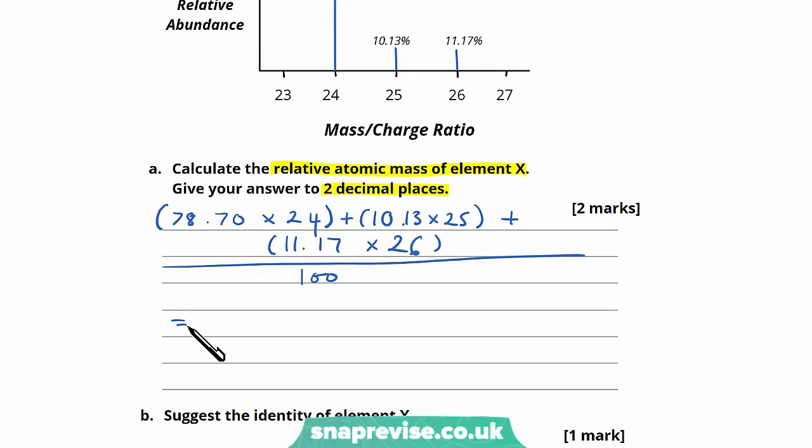That gives us, if you use a calculator, 2432.47 over 100, which is 24.3247. Now importantly, we're asked to give our answer to two decimal places, so our answer is 24.32. One mark comes from our calculation and the correct calculation to begin with, and the second and final mark from a correct final answer given to two decimal places.